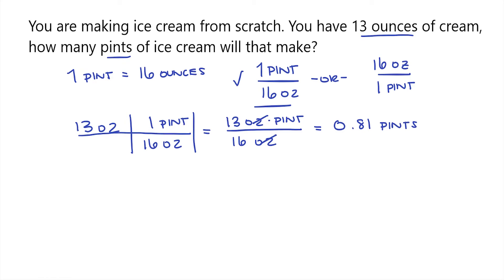So we now know that 13 ounces of cream will produce 0.81 pints of ice cream. And that is how you convert from ounces to pints.